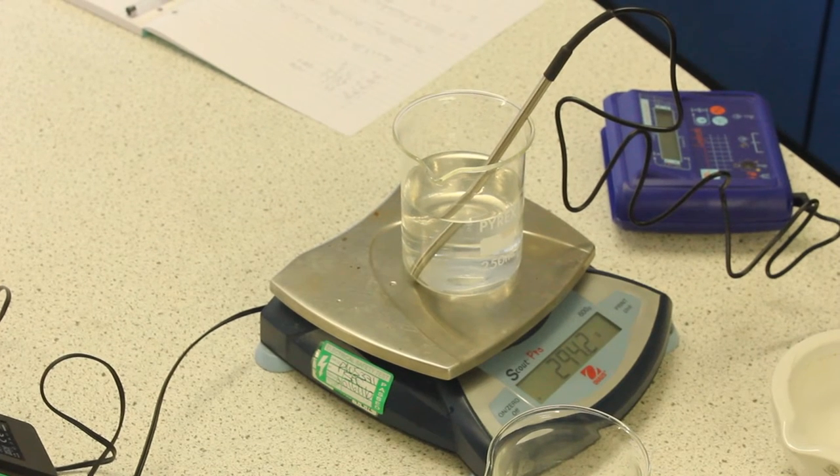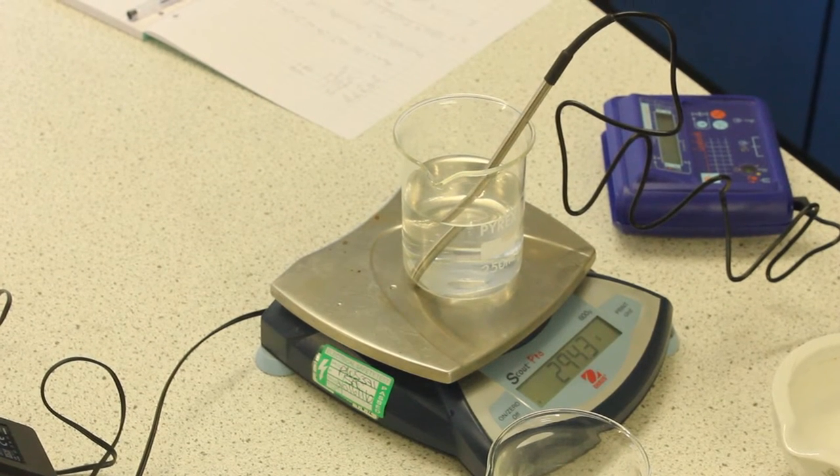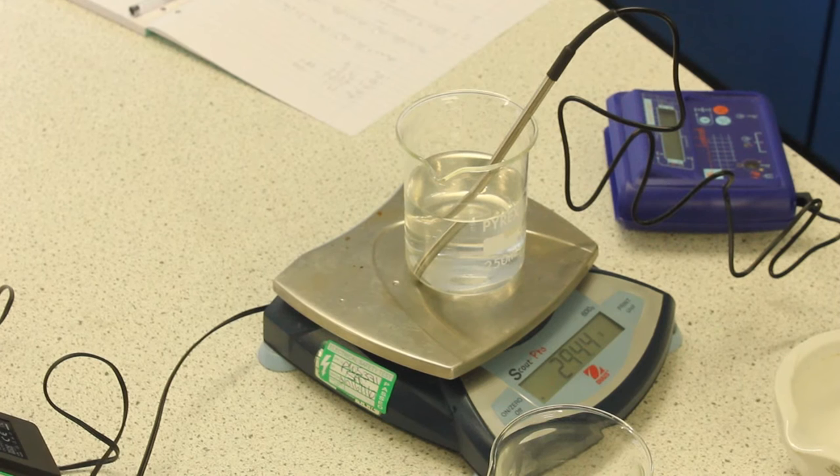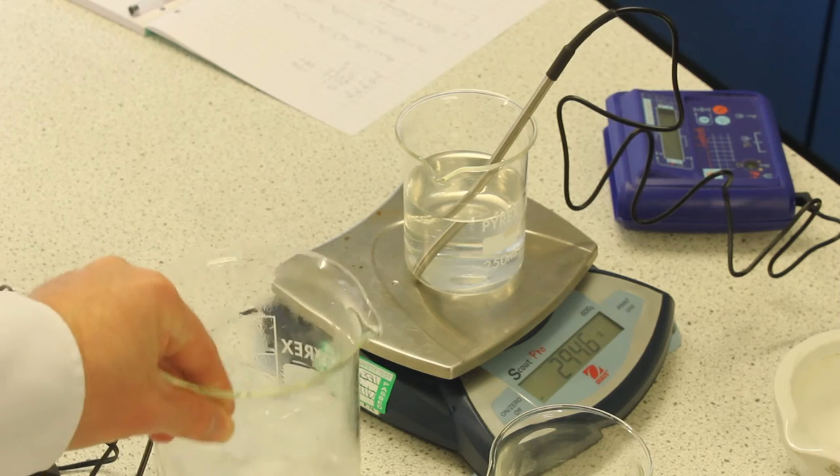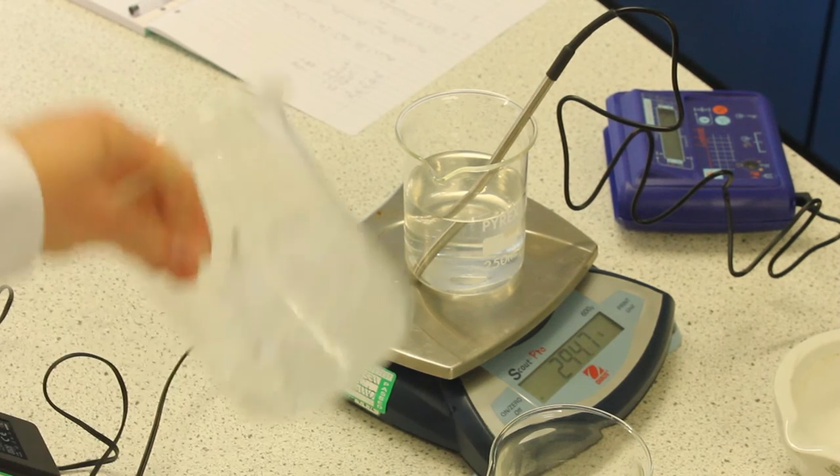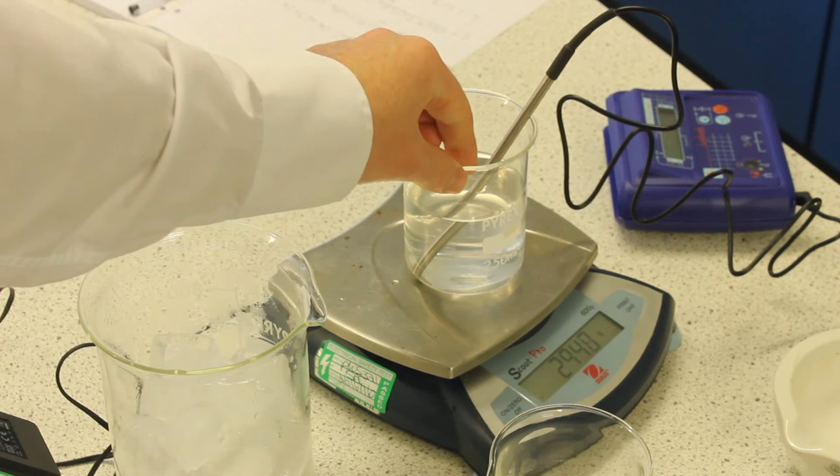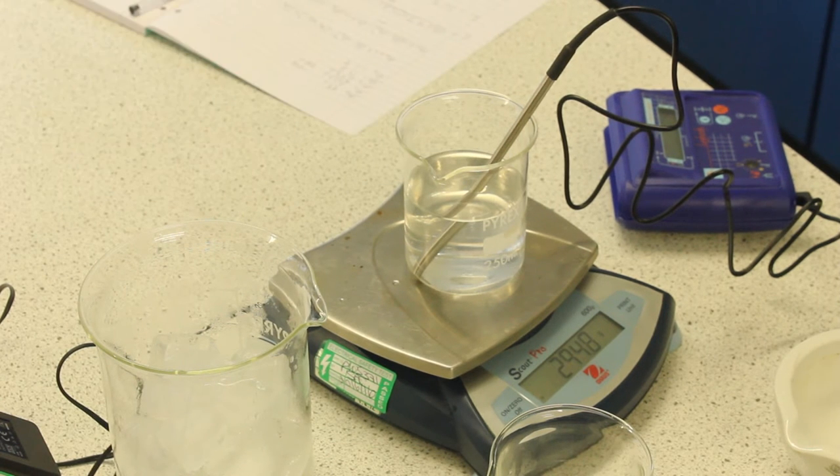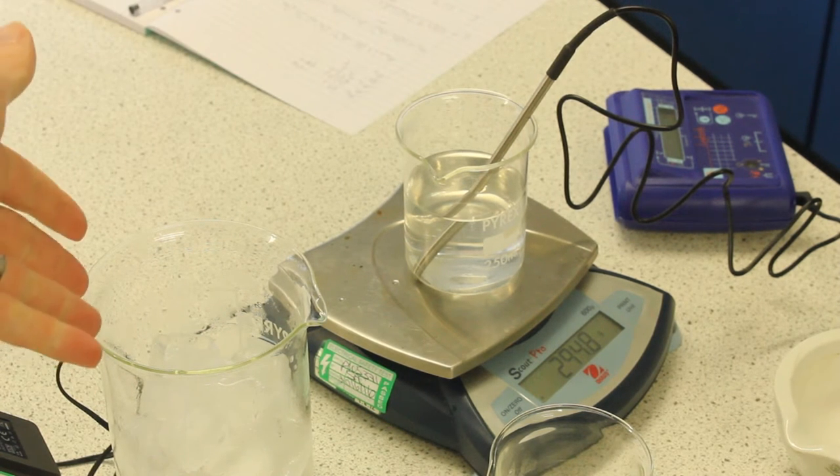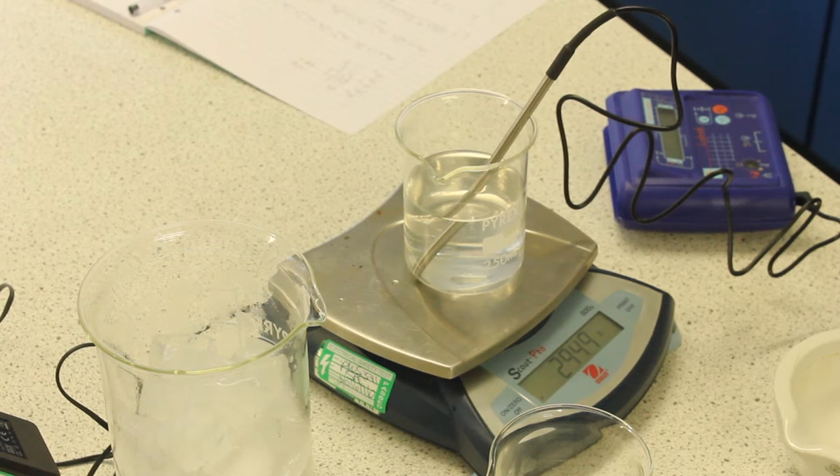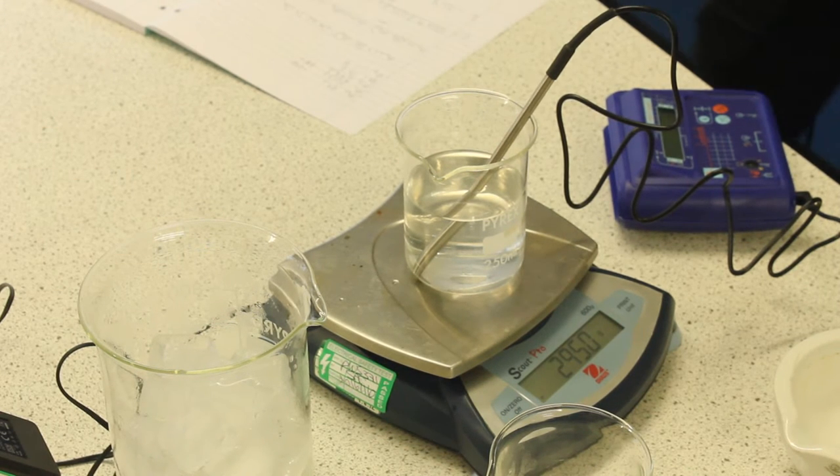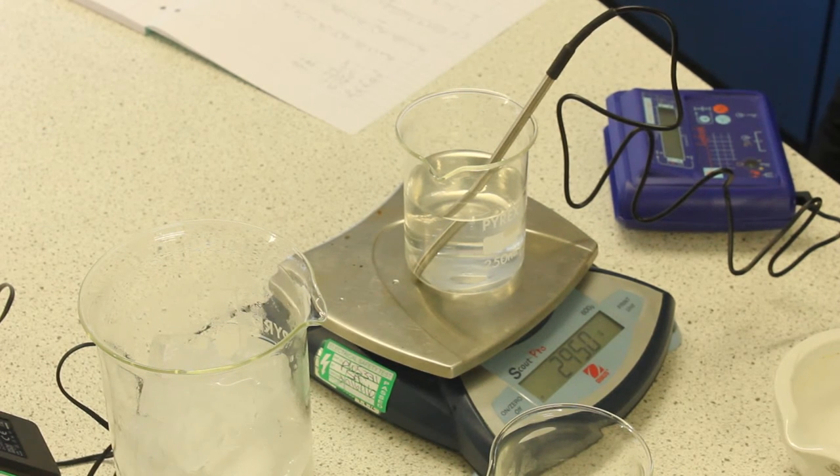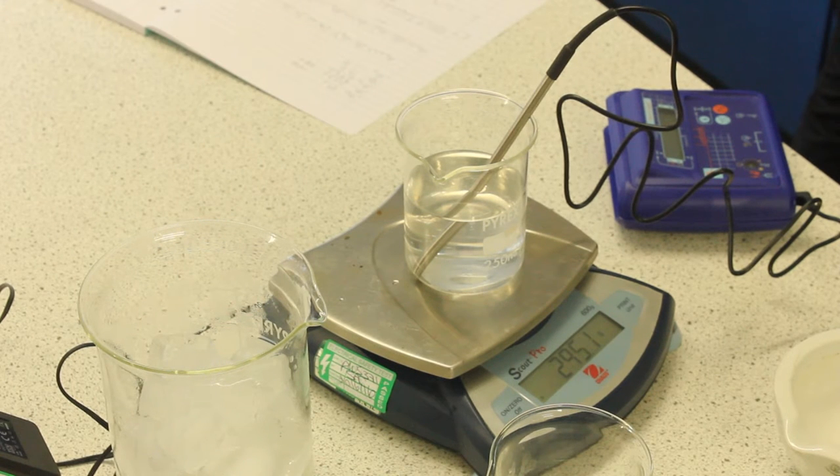This is an experiment to measure the specific latent heat of fusion of water. We're going to be using some ice, which we're going to crush in a moment, and we're going to be melting that in a beaker full of water. We're going to measure the temperature of the water beforehand, and then we'll measure the mass of the mixture afterwards once we've melted the ice, and then we're going to measure the temperature of the water afterwards as well.